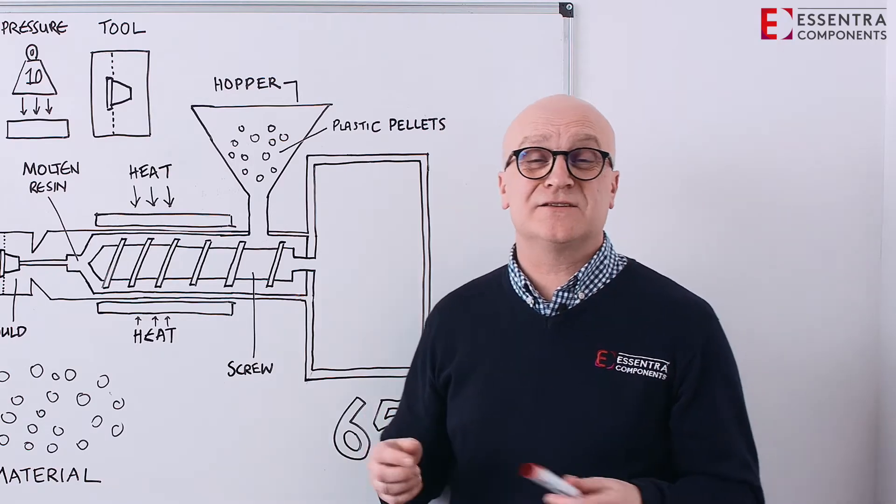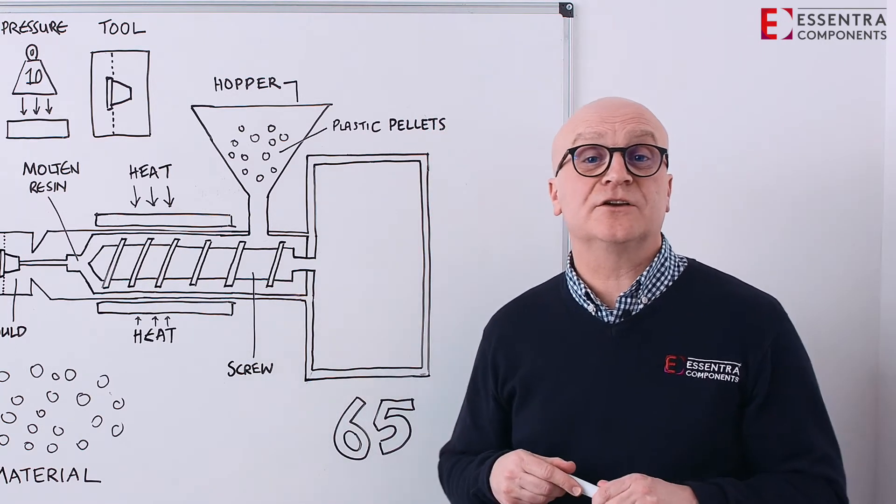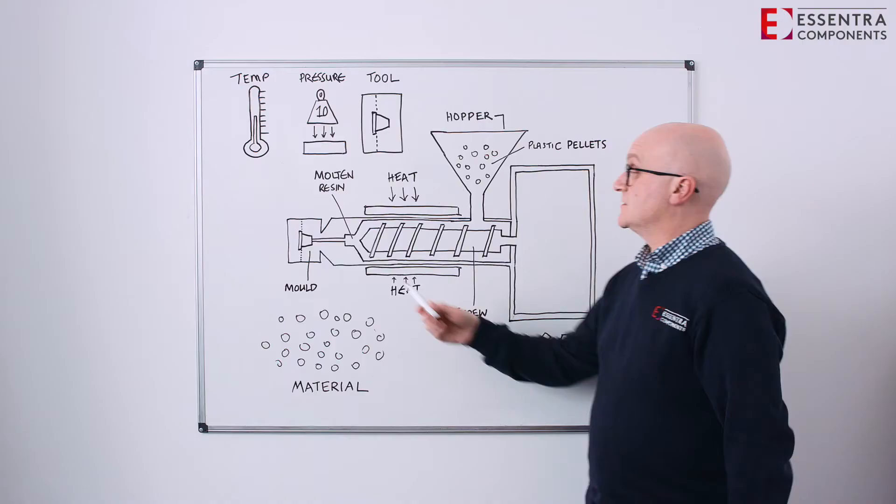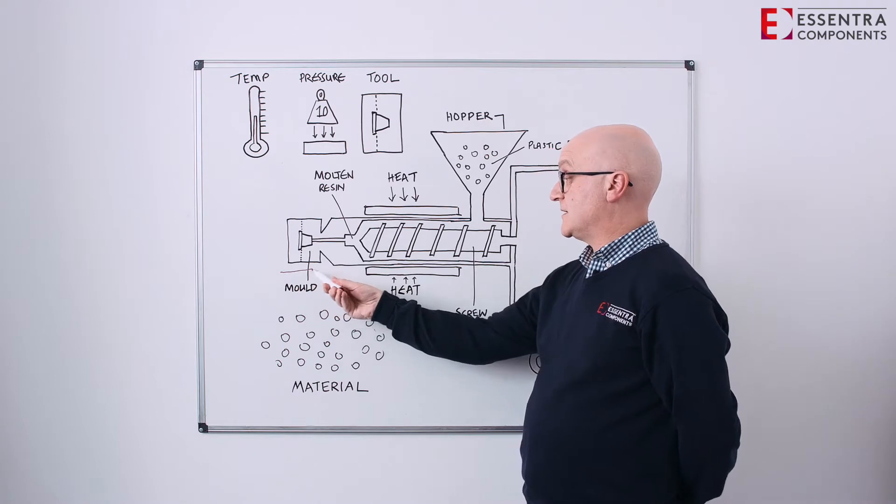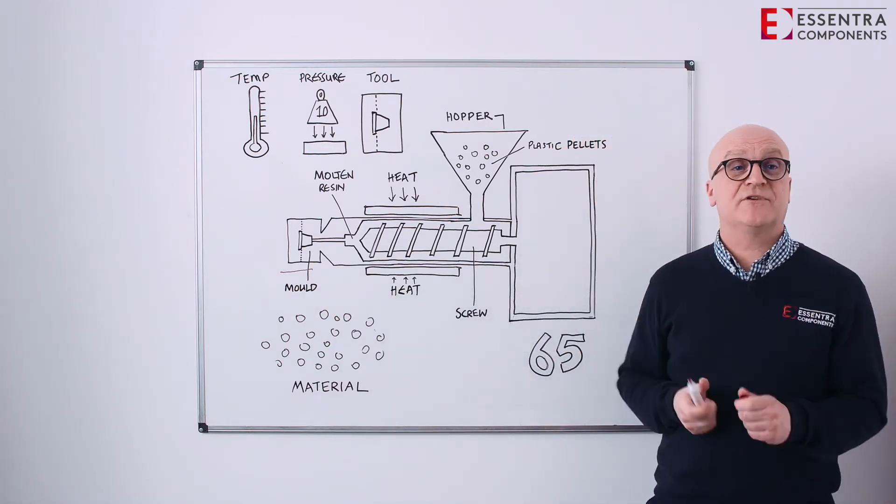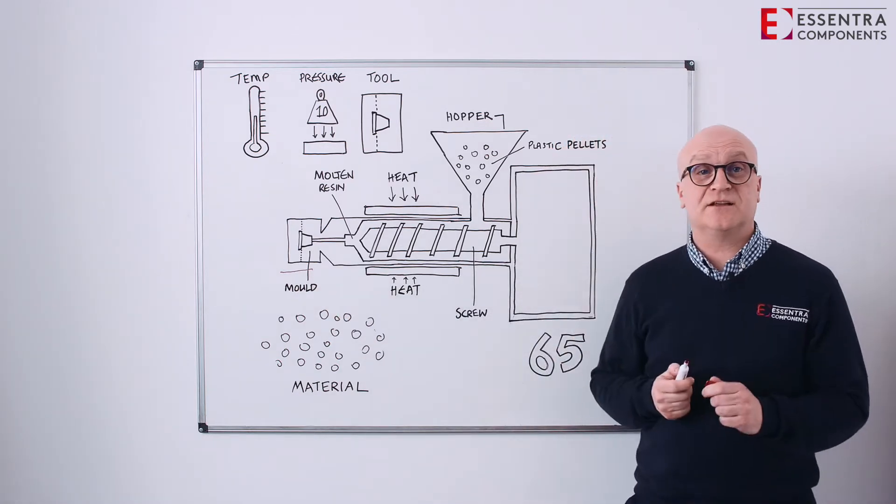We're going to break it down into some relatively simple steps. At the start of the cycle, we need the tool to close. So here's our tool. Basically, the tool closes and the clamp pressure builds up before we start to inject the material.